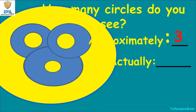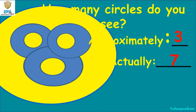Approximately we have seen only three circles, but actually there are seven circles as we have counted.